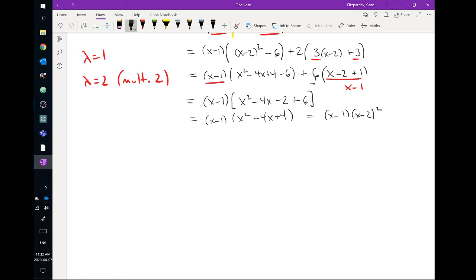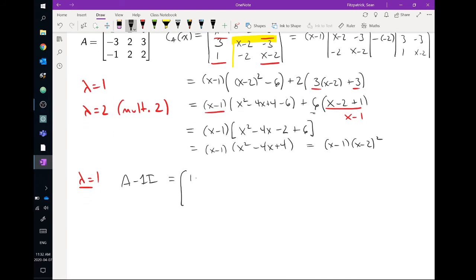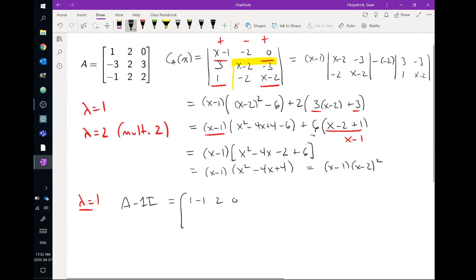Okay, so we want to find the corresponding eigenvectors. So we'll do lambda equals 1 first. And so for lambda equals 1, we're going to do A minus 1 times the identity. And that gives us 1 minus 1, 2, 0, minus 3, 2 minus 1, 3, minus 1, 2, 2 minus 1. So 0, 2, 0, minus 3, 1, 3, and then minus 1, 2, 1. Okay.